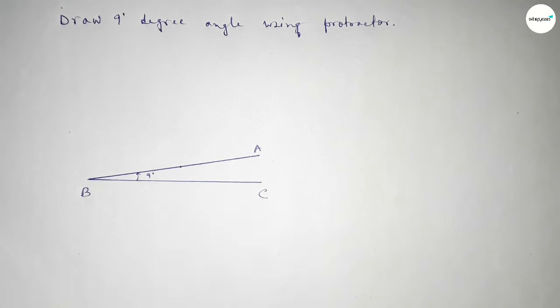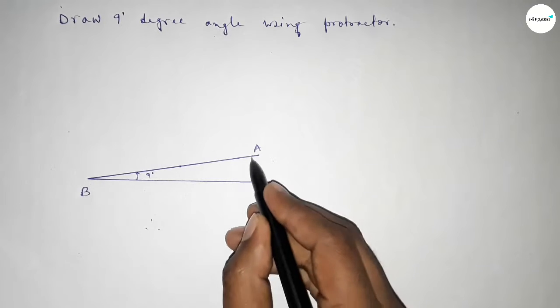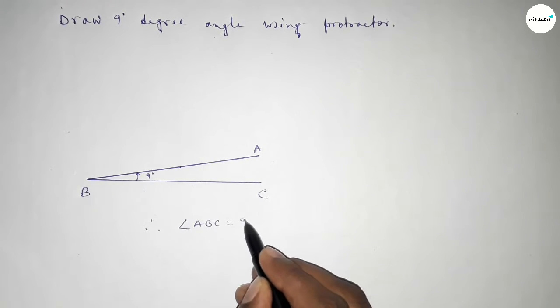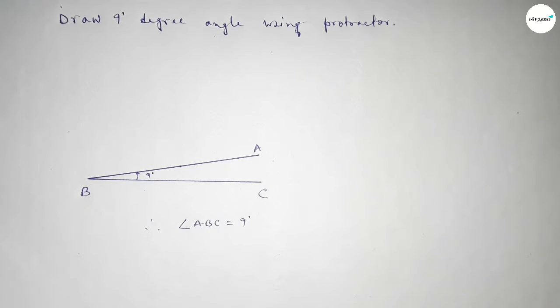Up to this, this is a 9-degree angle. So therefore, angle ABC equals 9 degrees. That's all, thanks for watching. If this video is helpful to you, then please share it.